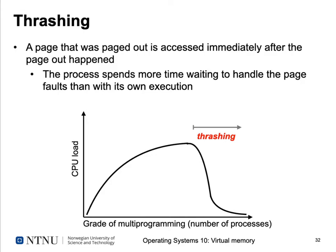An effect observable in virtual memory systems is that a paged-out page is accessed immediately after being paged out. When this happens repeatedly, it's called thrashing: the process continuously tries to access a page that keeps getting paged out and back in. In essence, the process spends more time waiting to handle page faults than executing its own code. You can observe this when CPU load on the y-axis drops as the number of running processes increases — the computer is busy paging instead of executing code.